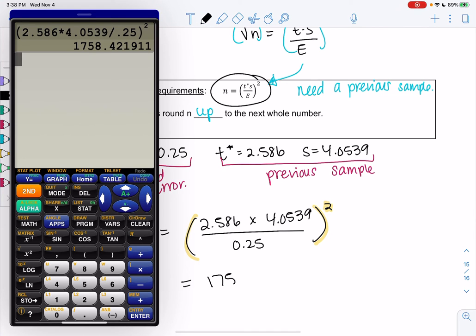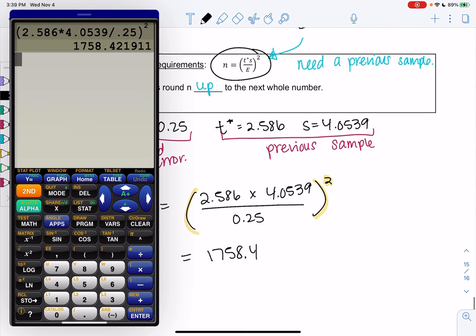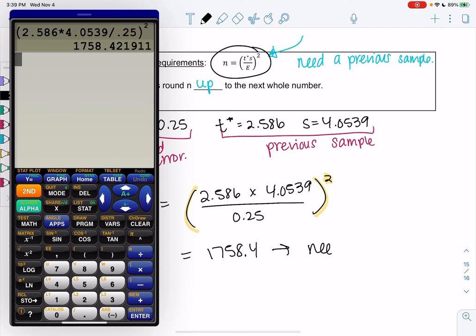We get 1,758.4, and so we're going to go ahead and round up. So we need a sample of 1,759. I think this is a little bit easier than the proportion one because we don't have that weird P guess. And that's it.